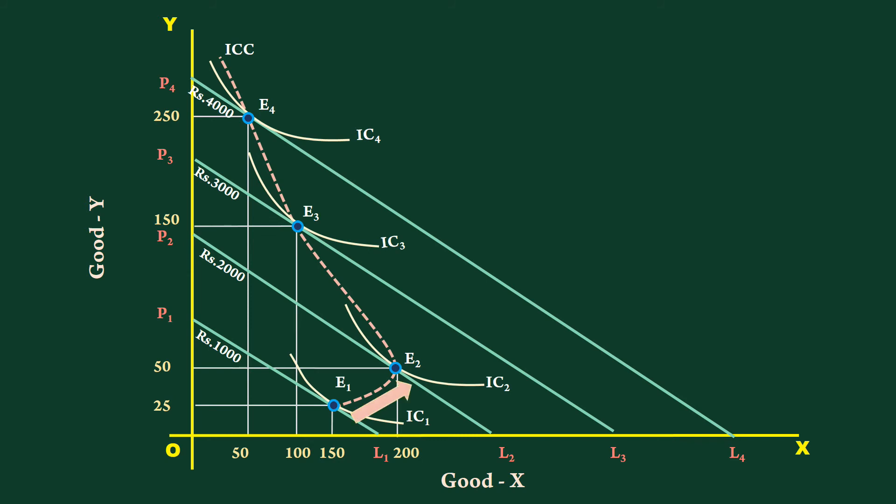You must understand there is positive relation between income and quantity demanded for good X in the low range of income, that is thousand rupees to two thousand rupees. In this range, good X is a normal good. Beyond that, it becomes an inferior good.